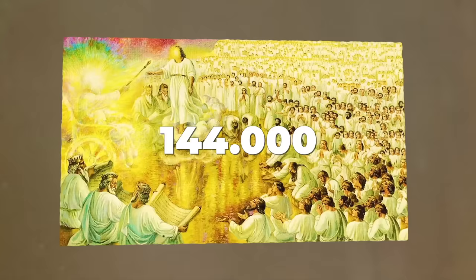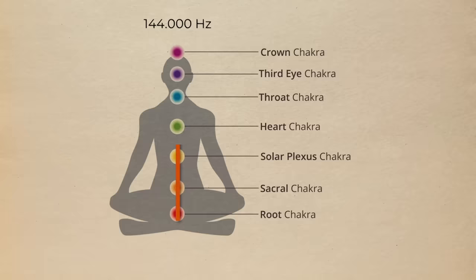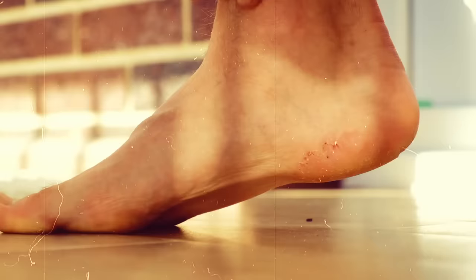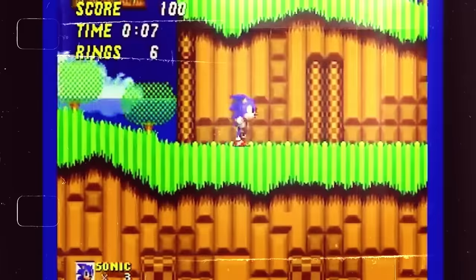Some Christians believe that 144,000 will ascend to heaven. This number is thought to represent a frequency required to transition from the root to the crown chakra. This is because the head symbolizes heaven, while the heel represents hell.